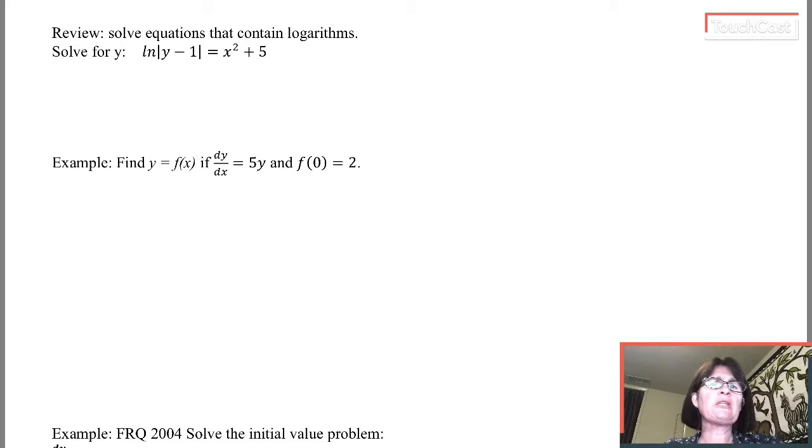So if I look at this equation, natural log of the absolute value of y minus 1 equals x squared plus 5, I want to undo whatever it is that's happening to y. But y is inside absolute value bars, which is like a grouping symbol, and that whole expression, y minus 1, is having its natural log taken.